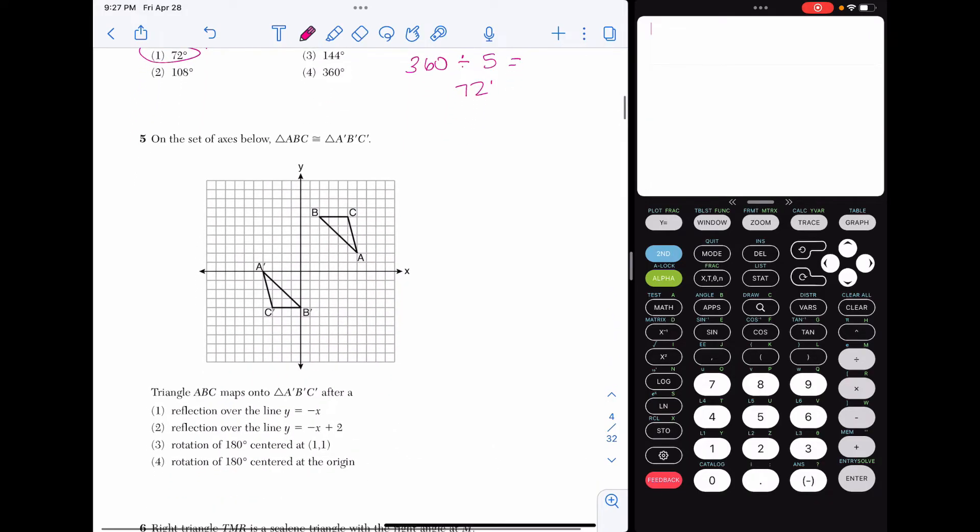Alright, number five. On the axes below, triangle ABC is congruent to triangle A prime B prime C prime. We want to know what transformation has basically happened here. So we have two answer choices that deal with reflections, two answer choices that deal with rotations. This definitely looks like, to me, like a rotation of 180 degrees. It looks like it's upside down. We just have to figure out now, between choice three and four, what the center of rotation is.